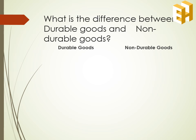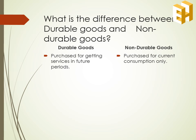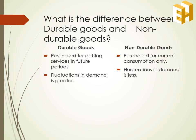The difference between durable and non-durable goods is that durable goods are purchased to get services in the future, whereas non-durable goods are purchased for current consumption only. The demand for durable goods is volatile because their consumption can be postponed; on the other hand, demand fluctuations in case of non-durable goods are less.